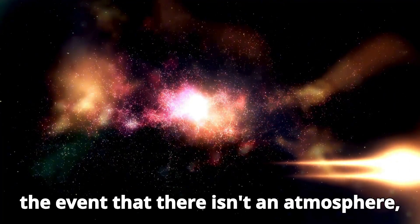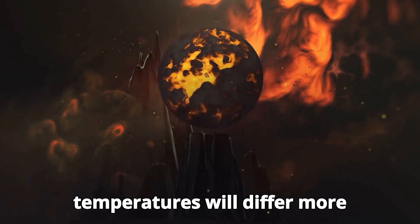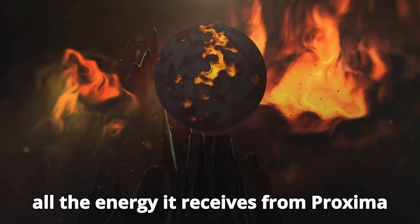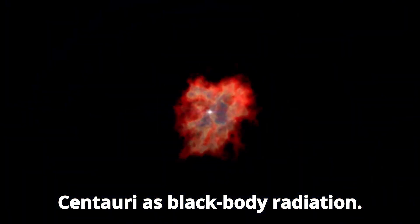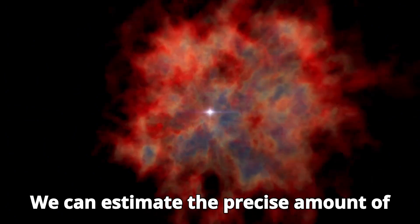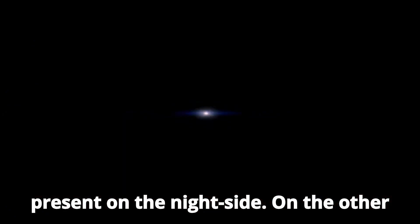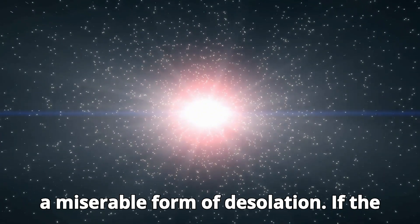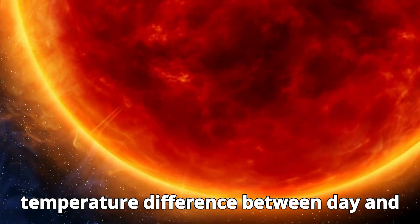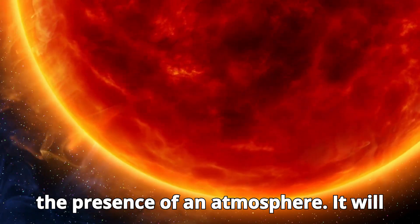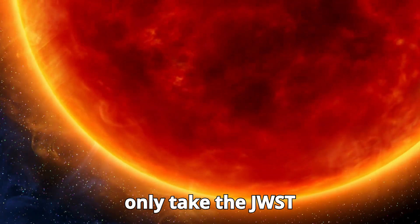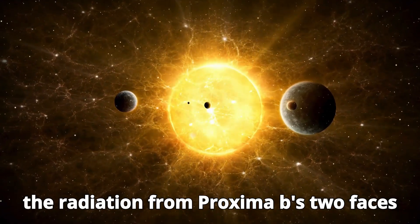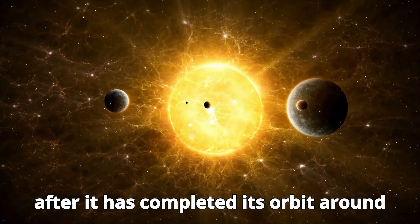In the event that there isn't an atmosphere, Proxima b's day side and night side temperatures will differ more significantly. The day side will radiate all the energy it receives from Proxima Centauri as black body radiation. We can estimate the precise amount of black body radiation that should be present on the night side. On the other hand, the night side will appear frozen, a miserable form of desolation. If the temperature difference between day and night is less pronounced, we can infer the presence of an atmosphere. It will only take the JWST 111.2 Earth days to measure the radiation from Proxima b's two faces after it has completed its orbit around the star.